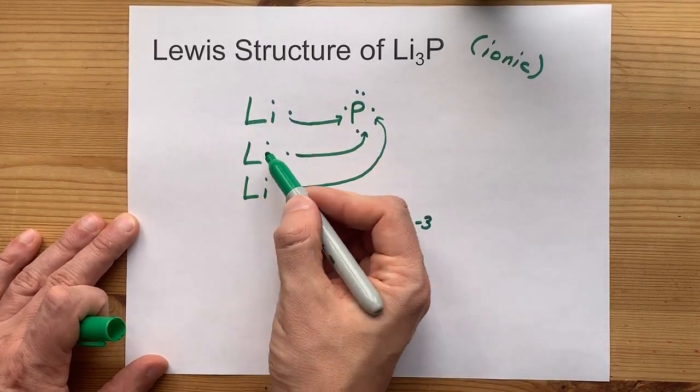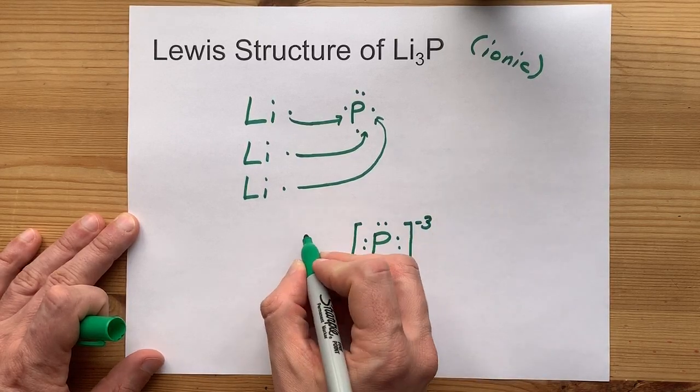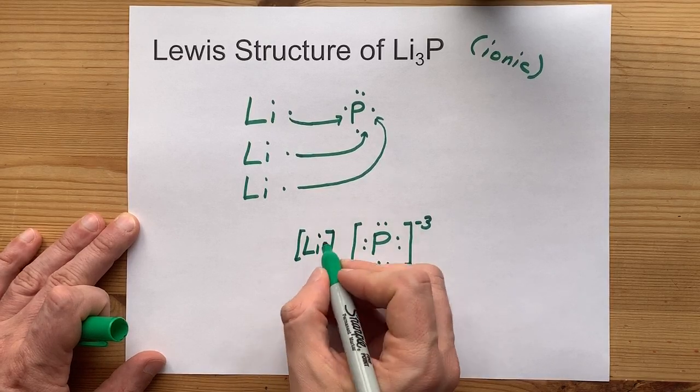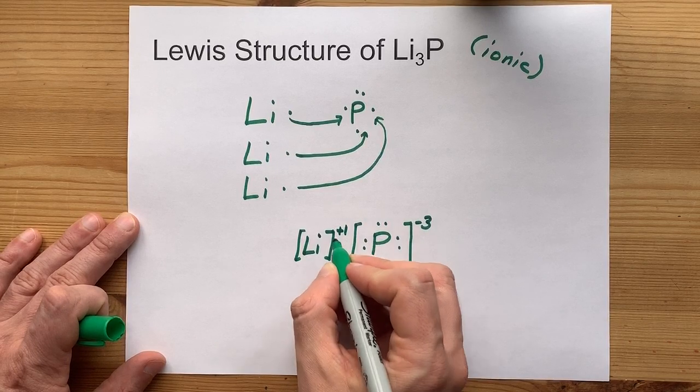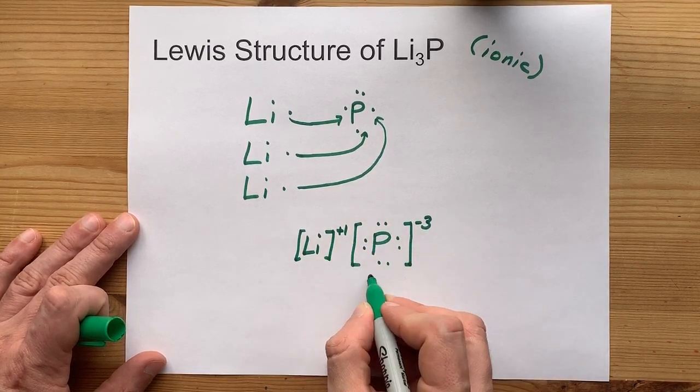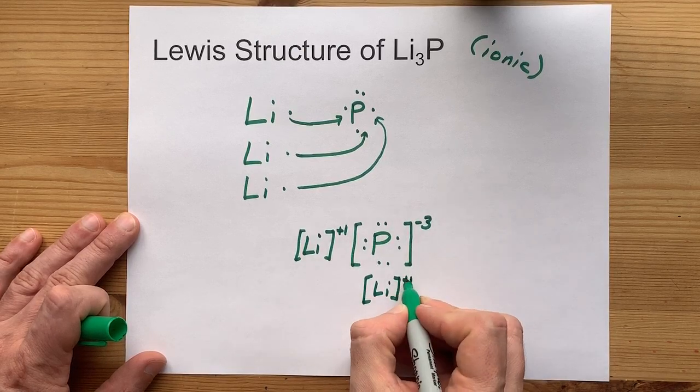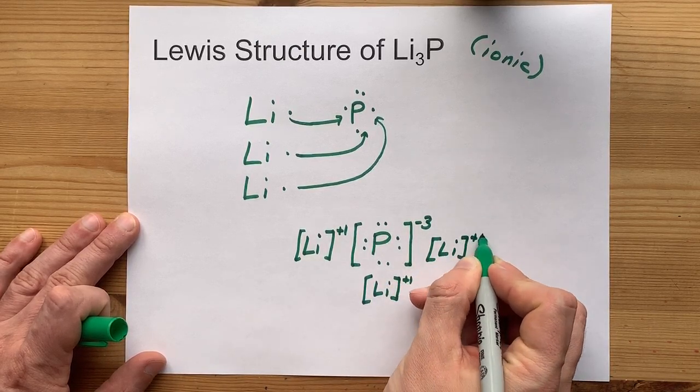And it requires 3 lithiums, giving up 1 electron each to make that happen. Lithium, without that extra valence electron, is just Li, no dots, with a plus 1 charge, because it gave up 1 electron. Now let me draw 3 of them, because 3 were required. There we go.